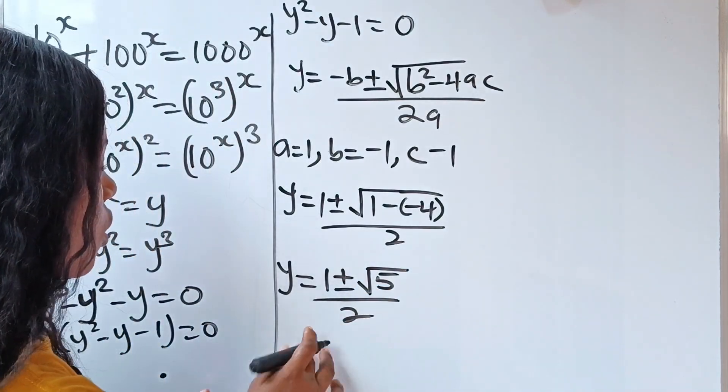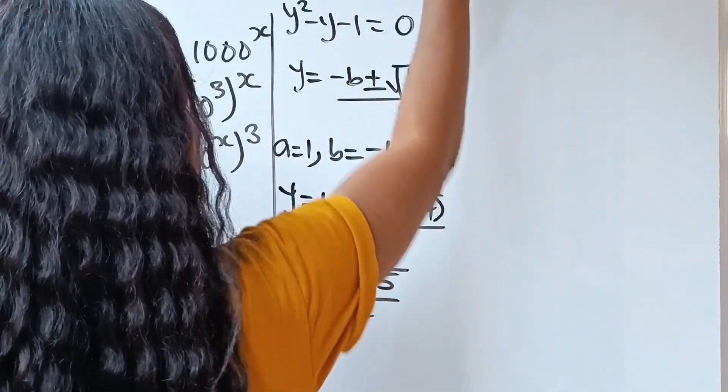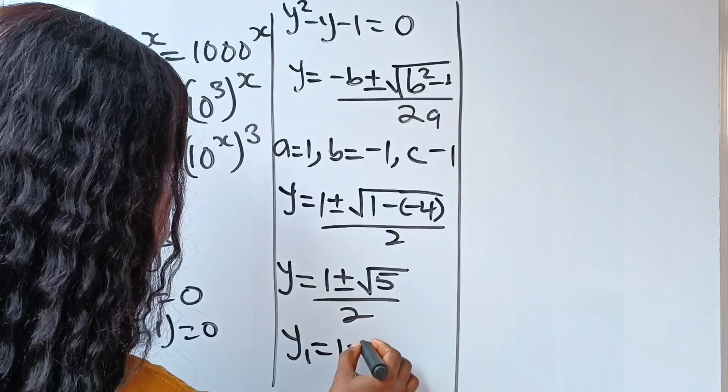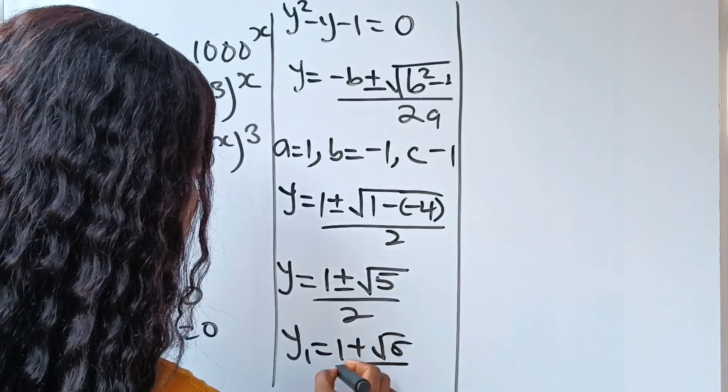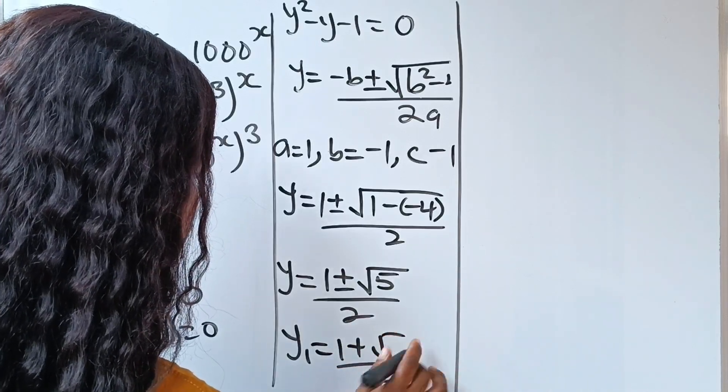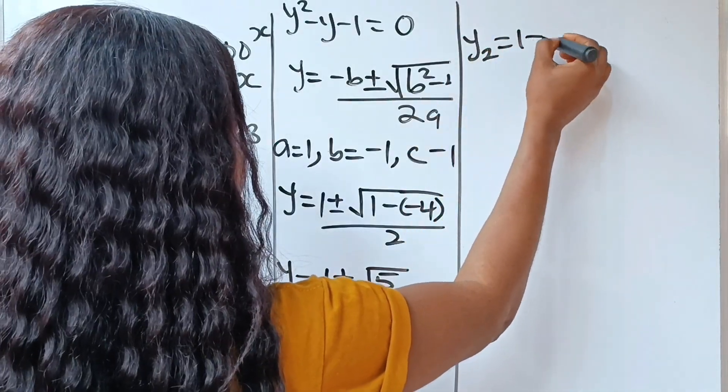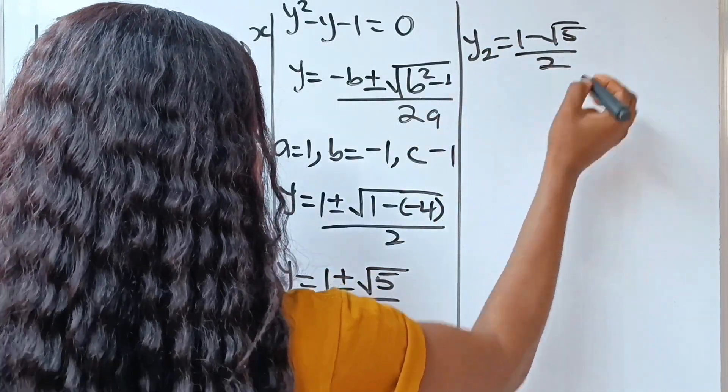So that means we have two values of our y here. Now the first value is that y1 is equal to 1 plus root 5 over 2. This is 5. And y2 is equal to 1 minus root 5 over 2.